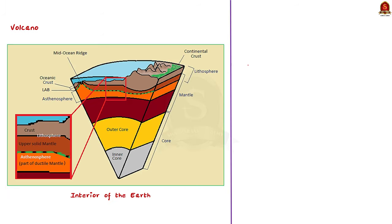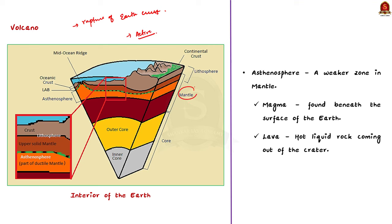First of all, what is a volcano? A volcano is a rupture in the earth's crust from where gases, ashes, or molten rock material like lava escapes onto the ground. A volcano is called an active volcano if the materials mentioned above are being released recently or have been released in the recent past. The layer below the solid earth crust is the mantle, which has higher density than the crust. The mantle contains a weaker zone called the asthenosphere. It is from this zone that molten rock material finds its way to the surface. The material in the upper mantle portion is called magma. Once it starts moving towards the crust or when it reaches the surface, it is generally referred to as lava.